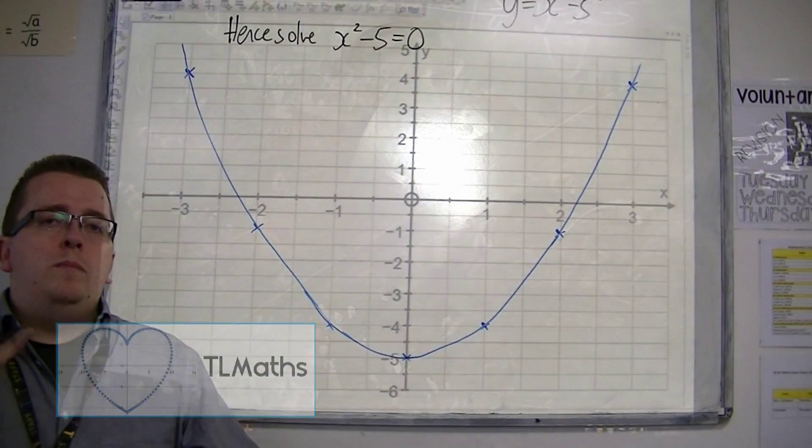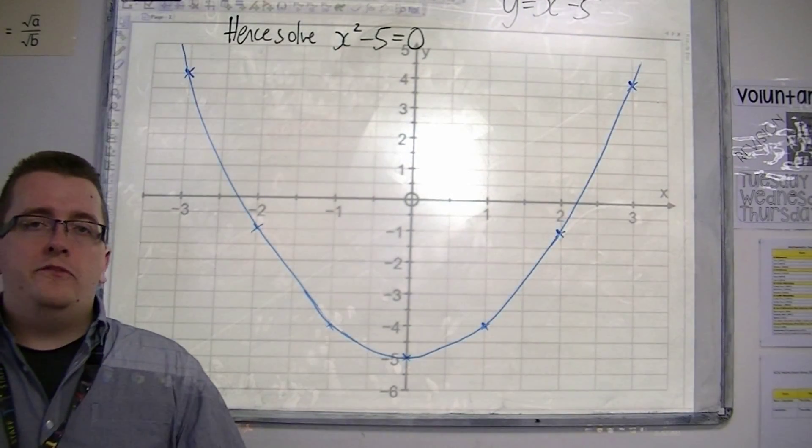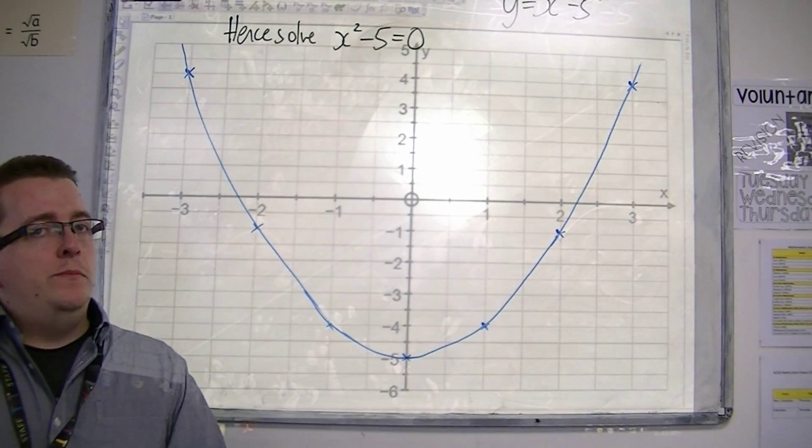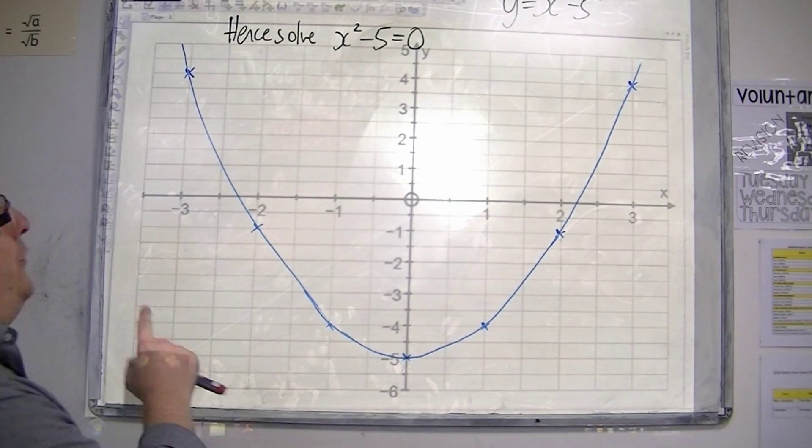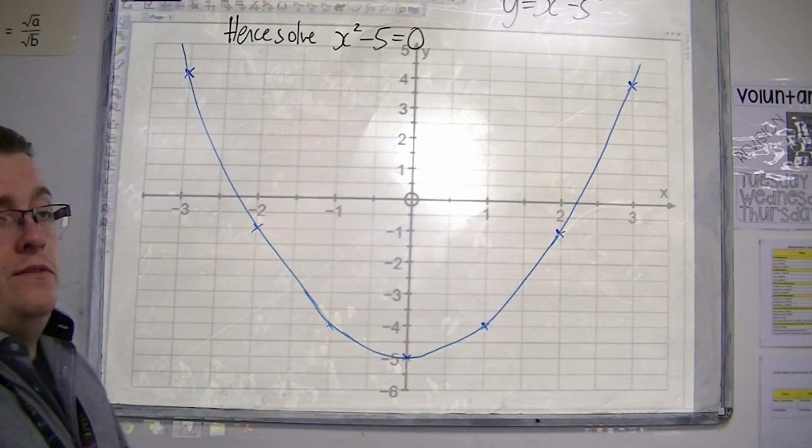So, in the previous video, we plotted this quadratic curve. Now, sometimes they're going to throw in a question that looks something like this. Hence, solve x squared minus 5 equals 0.